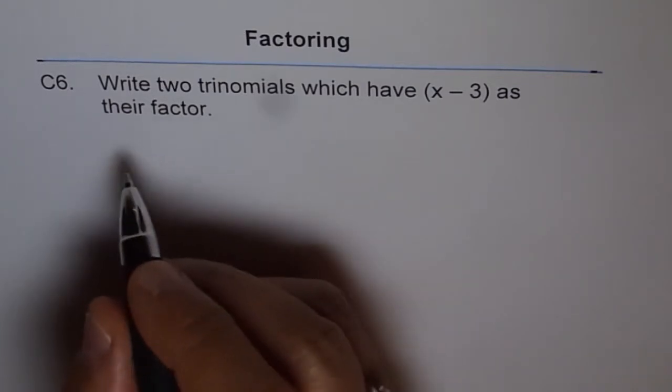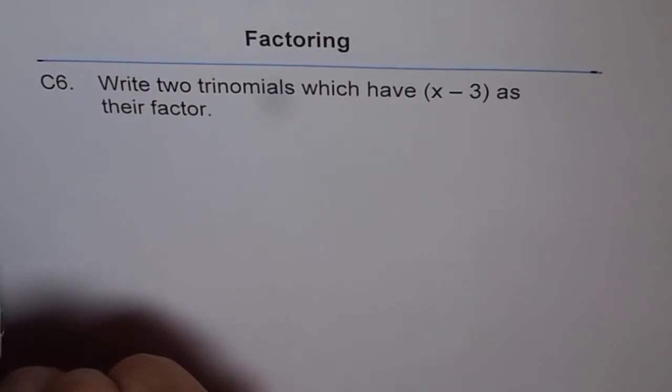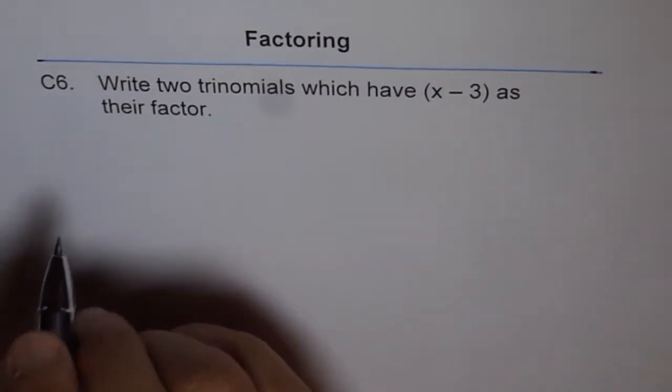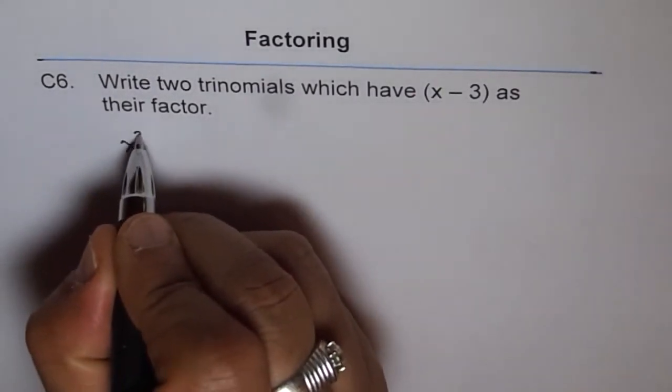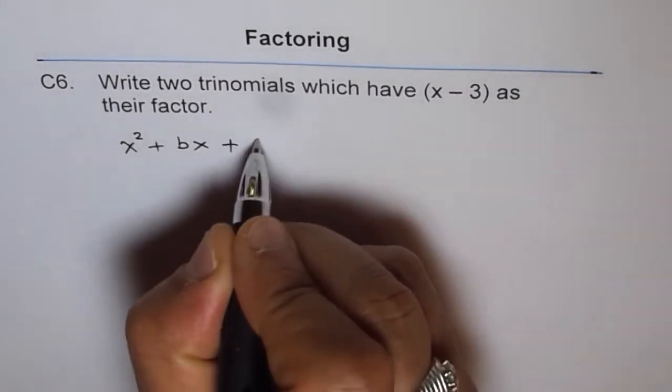Now trinomial is of the form ax squared plus bx plus c, but as a simple example, let's just write x squared plus bx plus c, a simplified version.